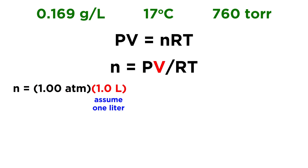For volume, we have a density — 0.169 grams per liter. So what if we just go ahead and assume 1 liter? Because we've got a ratio. If we plug in 1 liter, and then remember that means we're looking at 0.169 grams, the math should work out fine. So let's assume 1 liter.